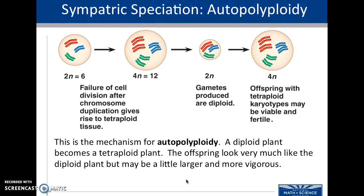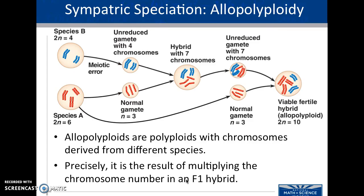This is the mechanism for autopolyploidy: a diploid plant becomes tetraploid or 4n. The offspring look very much like the diploid plant, but they are much larger and more vigorous and capable of growing much more quickly. They also are not capable of reproducing with the 2n organism. That's a pre-zygotic barrier — not being able to match up the number of chromosomes — and therefore it is considered a different species, and it can happen over one generation.